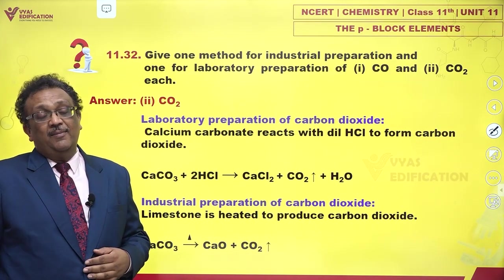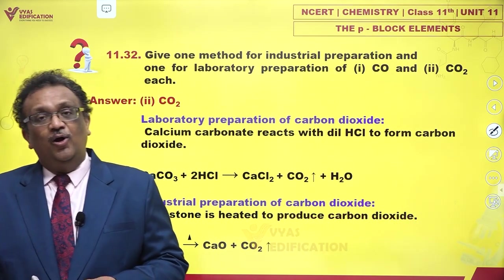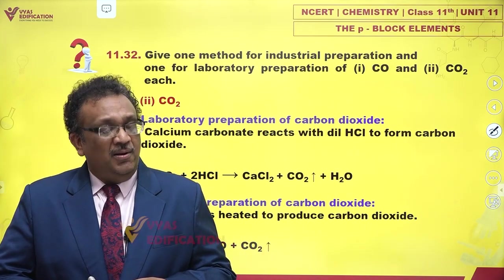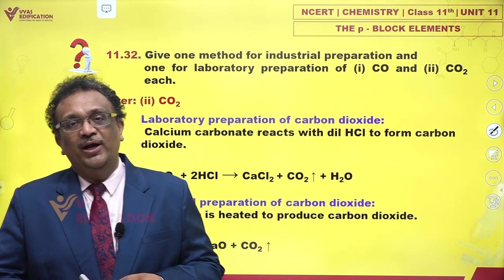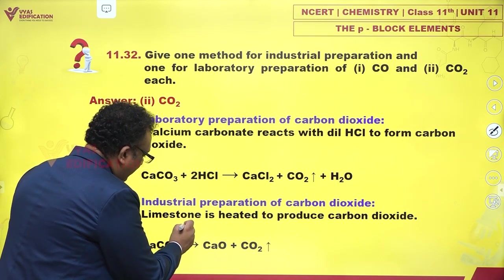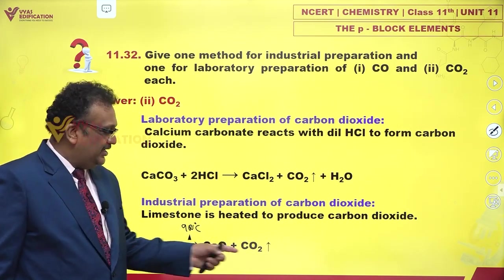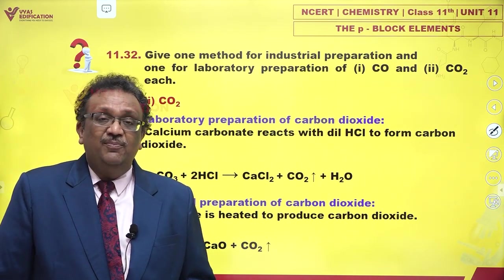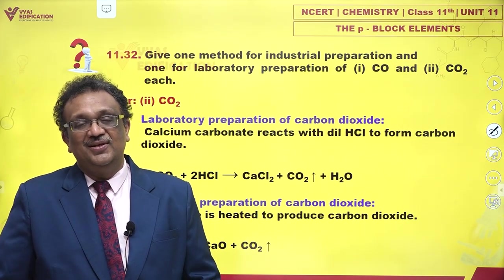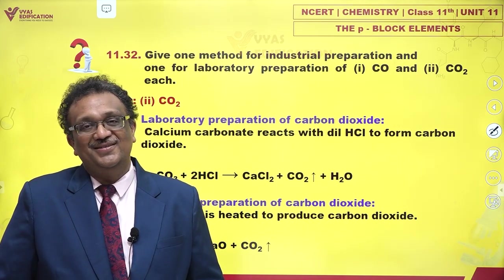About carbon dioxide, even industrial preparation is much, much easier. How do you do this? Just heat limestone. There is plenty of calcium carbonate on earth, and if this calcium carbonate is heated to 900 degrees Celsius, it decomposes into calcium oxide and CO2. That is one of the very major sources of industrial carbon dioxide, in case it is required.